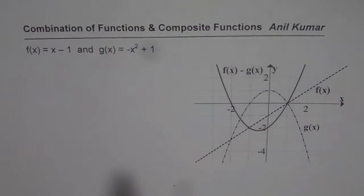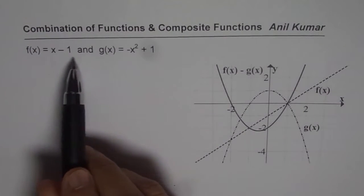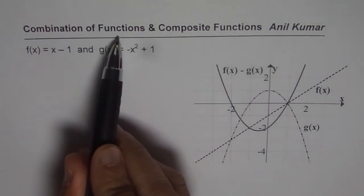f of x equals to x minus 1 and g of x equals to minus x square plus 1. In the previous video, we saw how to add them. So that was the combination we discussed.